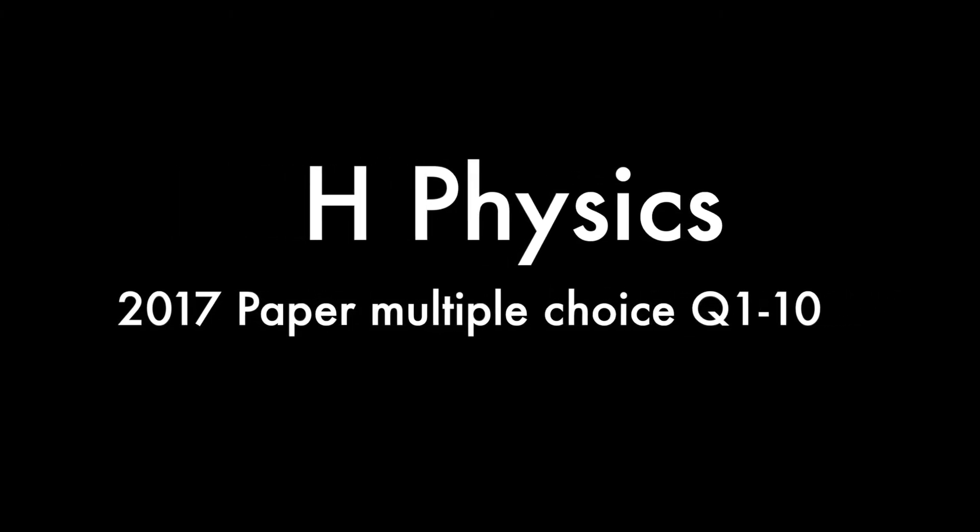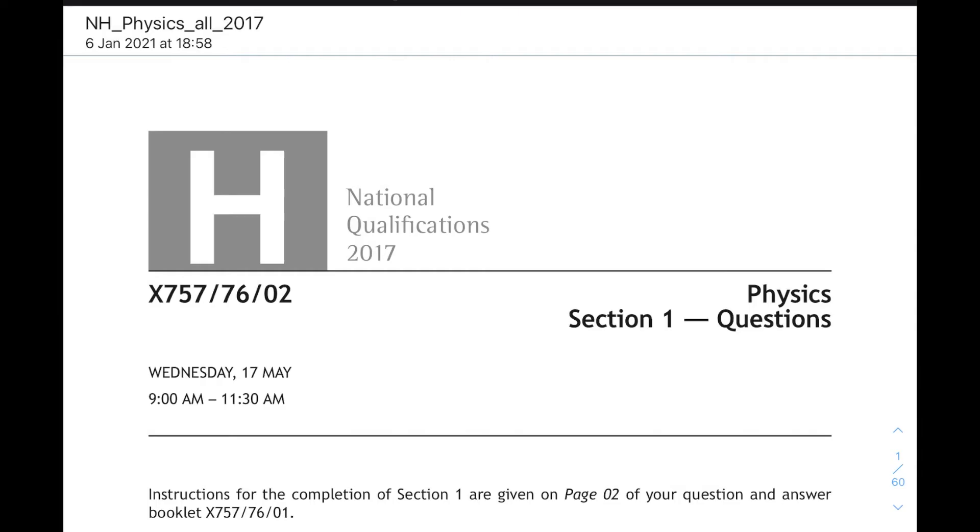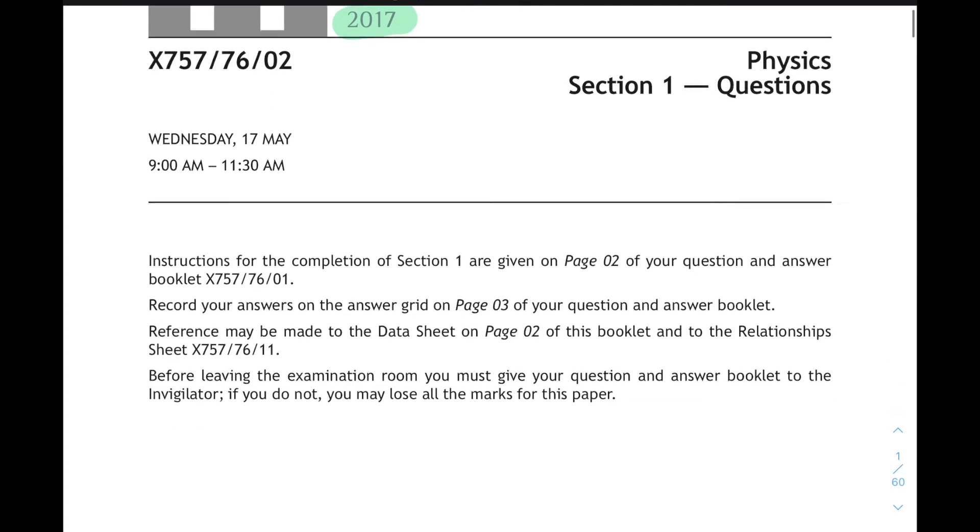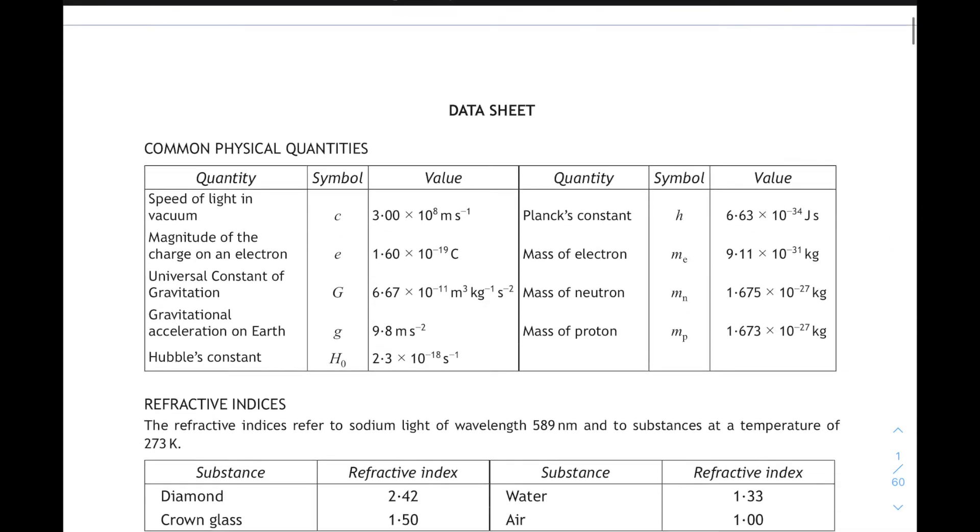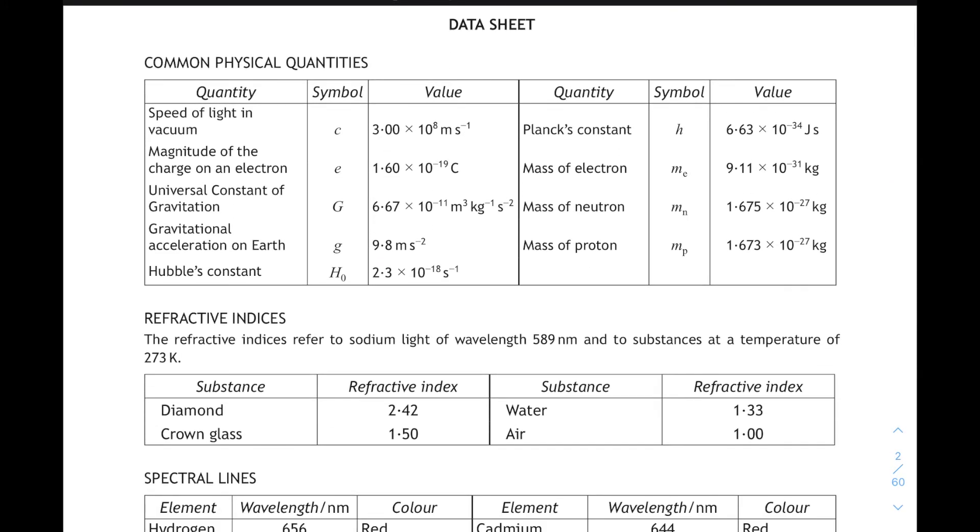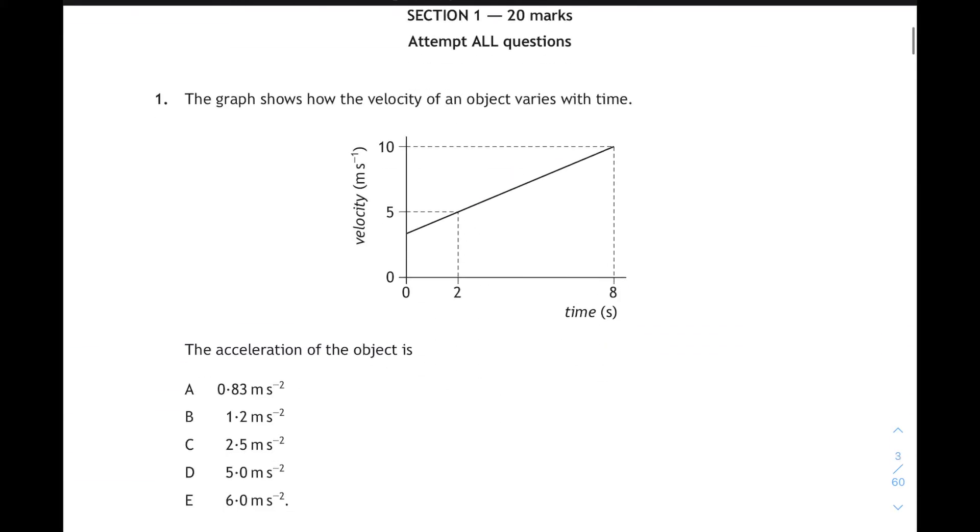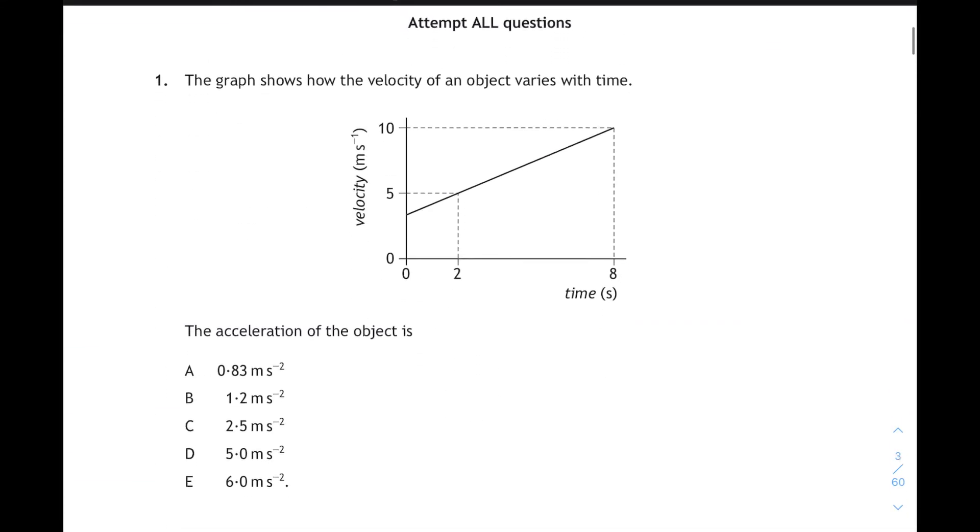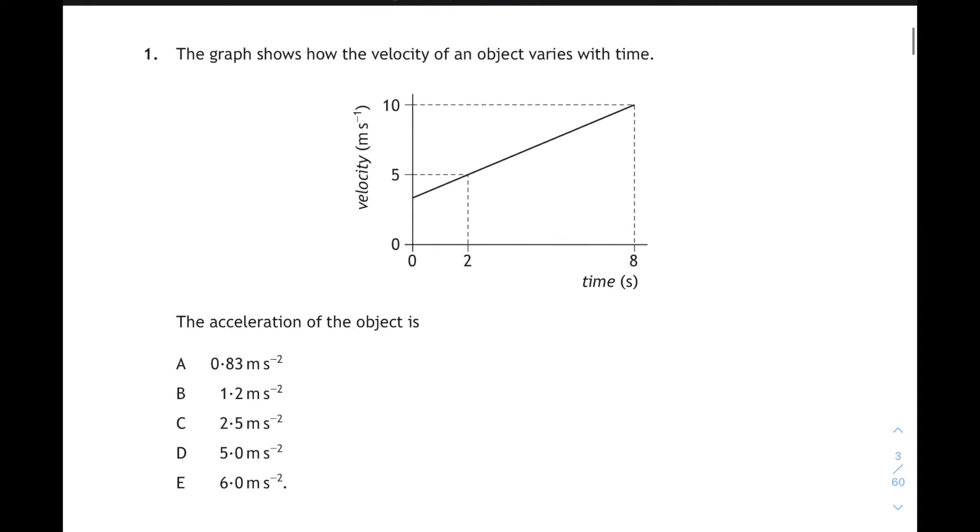Okay, hi everybody. We're going to have a quick look at the first half of the 2017 higher paper, the multiple choice section, questions 1 to 10. It's really on unit 1 and the first half of unit 2, our dynamic universe and particles and waves. There's the data sheet as usual. Make sure you refer to it when you need to. Let's jump straight in then with question 1. Remember, pause if you wish to have a look at the question yourself first.